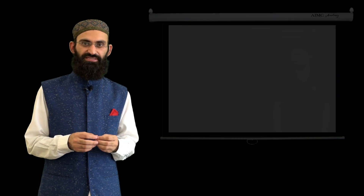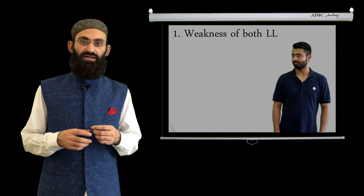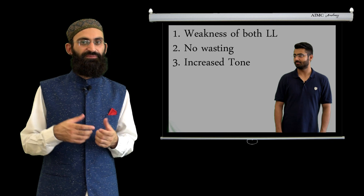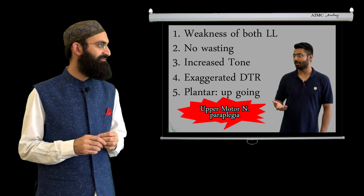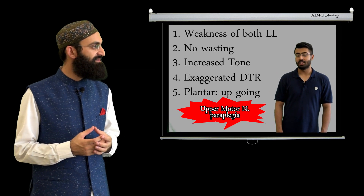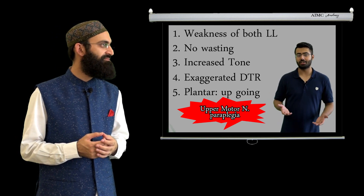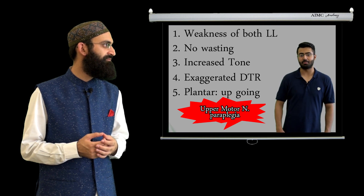Consider another patient with weakness of both lower limbs, but this time with no wasting, increased tone, exaggerated deep tendon reflexes, and upgoing planters — this is upper motor neuron type paraplegia, or spastic paraplegia. Since the lower motor neuron supply of the lower limbs comes from the lumbar spinal cord, the upper motor neuron lesion must be above the lumbar spinal cord. If there is no weakness of upper limbs, the cervical cord is intact, so the lesion must be in the thoracic cord.